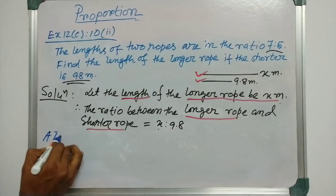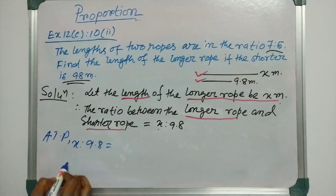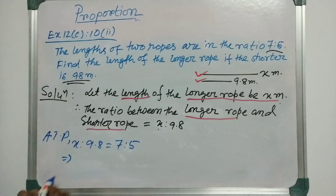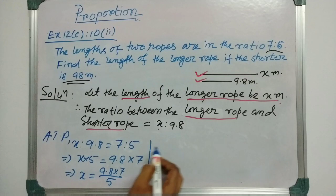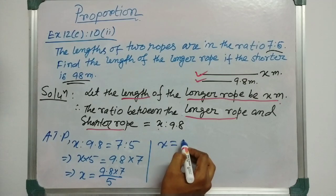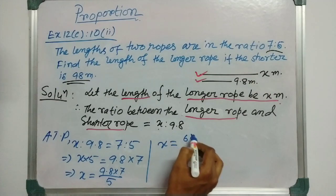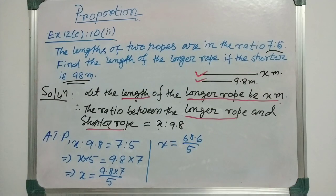Now, according to the problem, x is to 9.8 will be equal to 7 is to 5. So, x into 5 is 9.8 into 7. That implies x equals 9.8 into 7 divided by 5. x equals 9.8 into 7 is 68.6 divided by 5. Let us divide 68.6 divided by 5.